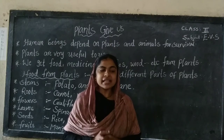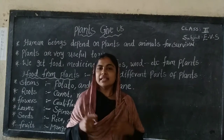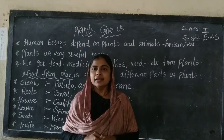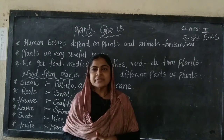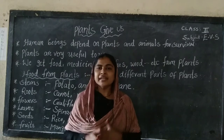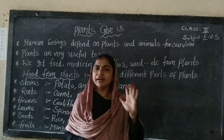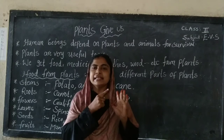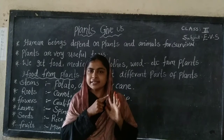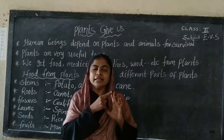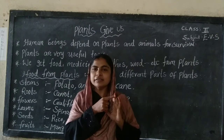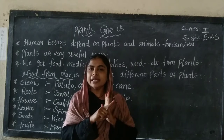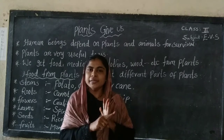In previous classes, we discussed about types of plants. Types of plants — how many types? Five types. First one: trees. Second one: shrubs. Third one: herbs. Fourth one: climbers. Fifth one: creepers.